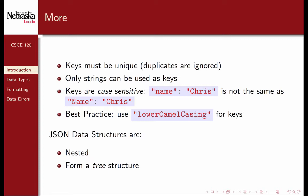Only strings can be used as keys. You cannot use numbers, objects, or arrays as keys. Moreover, keys are case sensitive — the key name with a lowercase 'n' is not the same as the key name with an uppercase 'N'. For best practice, use lower camel casing, where the first word is lowercase and the first letter of each subsequent word is uppercased.